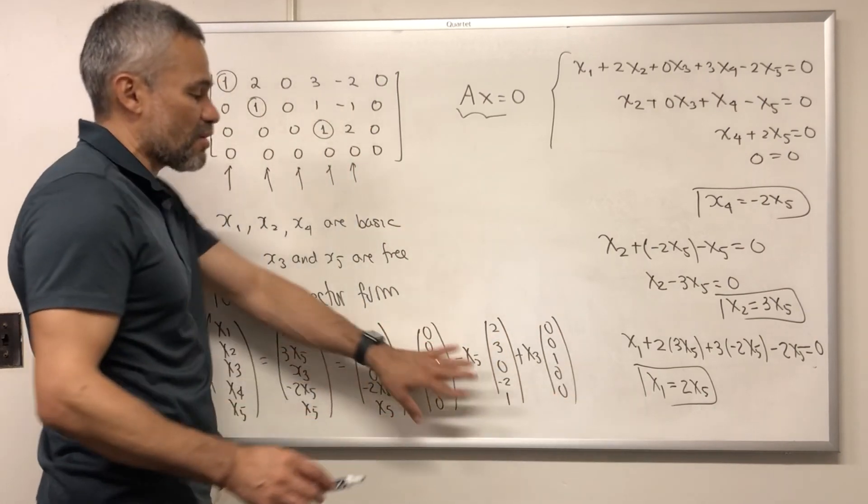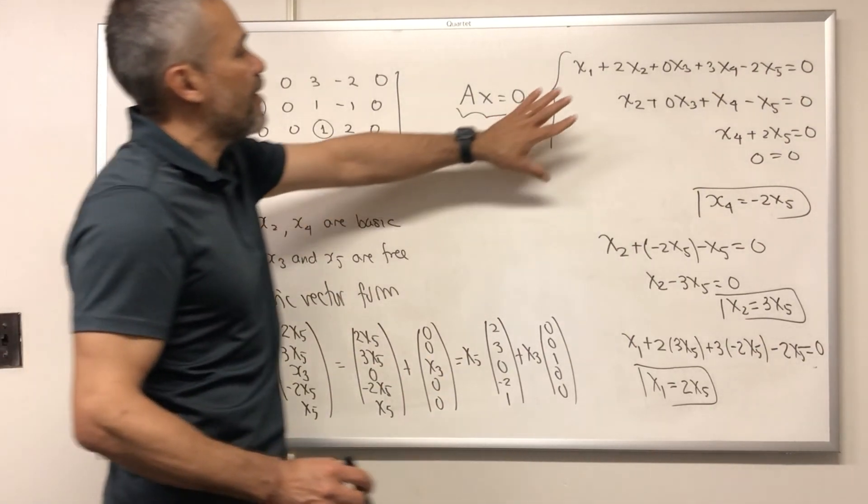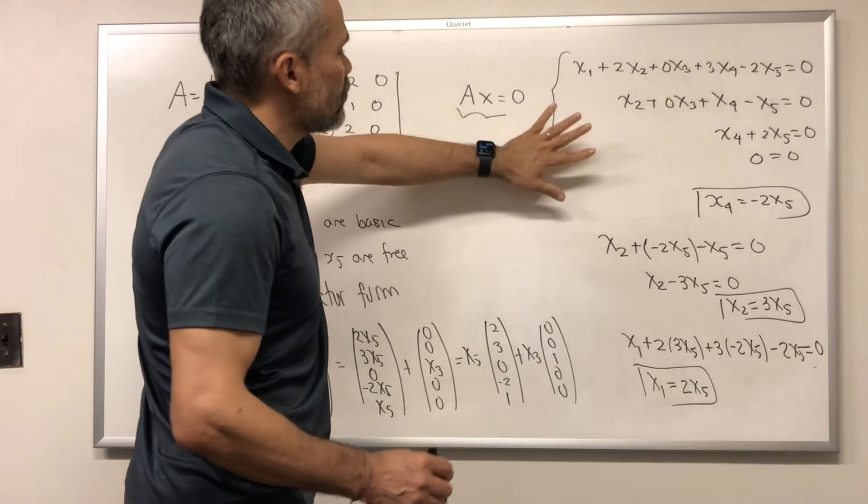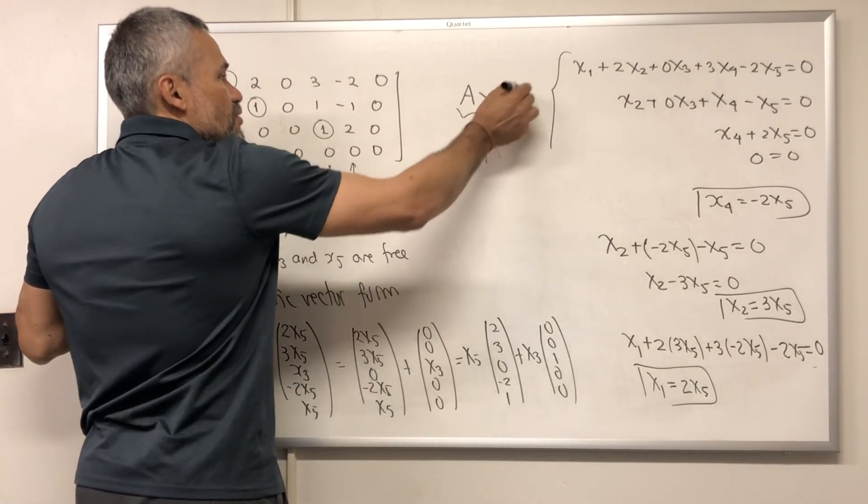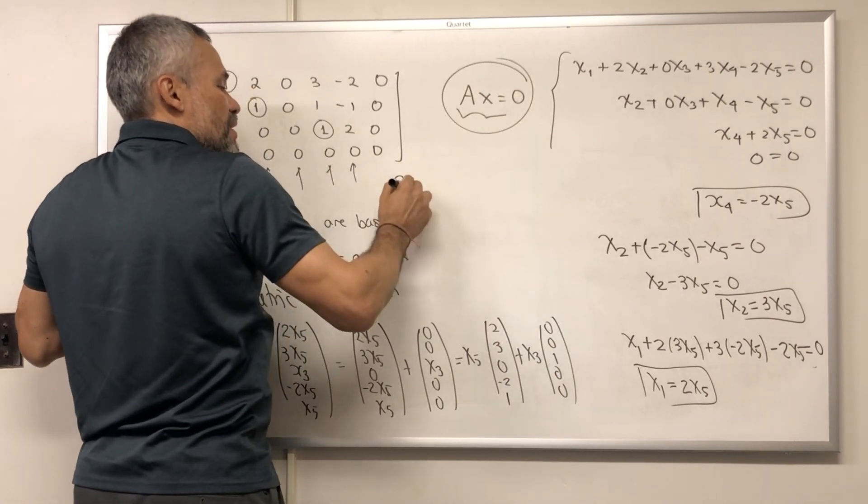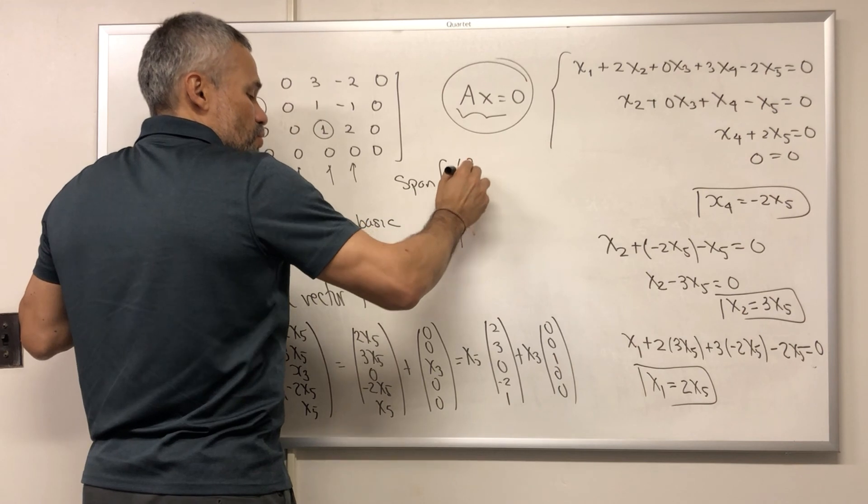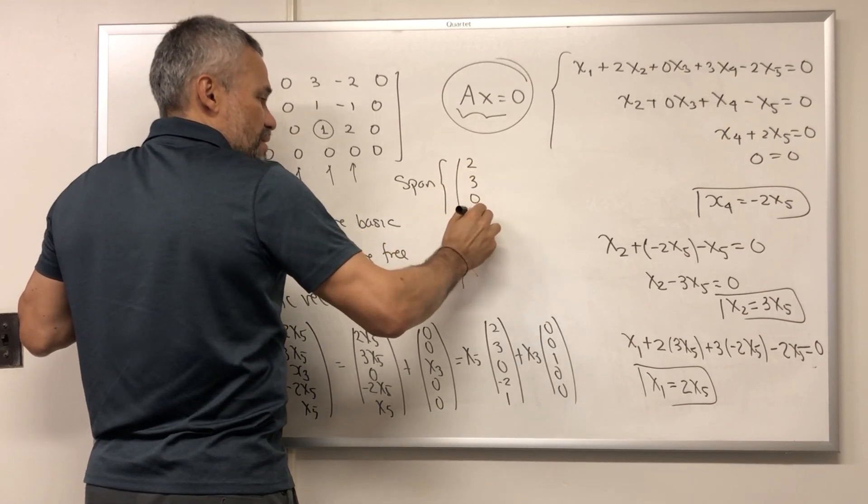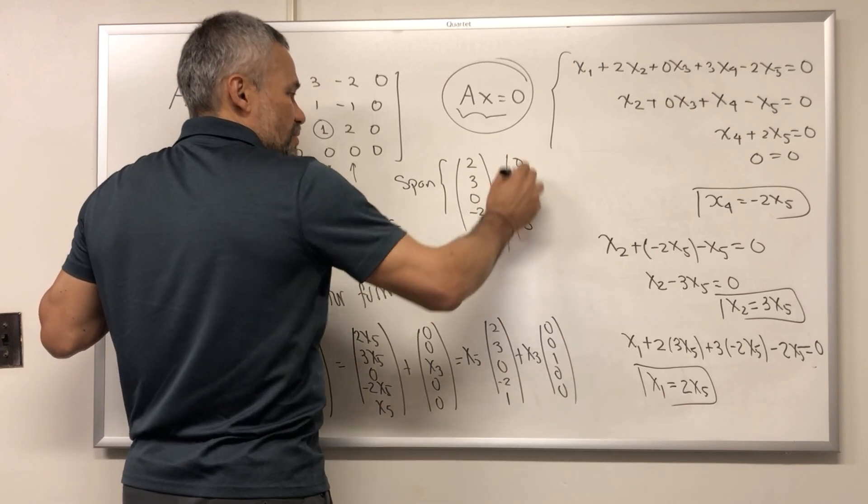This is what is called the solution in parametric vector form. Notice that every homogeneous system, the solution can be written as the span of some vectors. And in this case, the solution of this homogeneous system is the span of the vectors 2, 3, 0, negative 2, and 1. And 0, 0, 1, 0, 0.